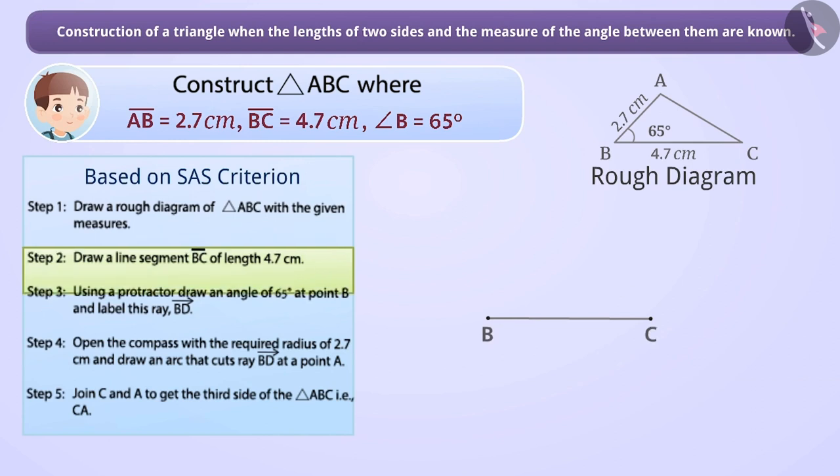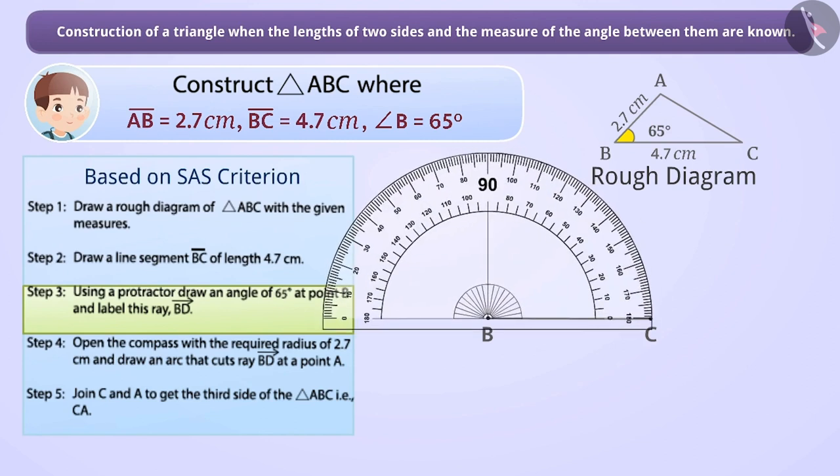Step 3. Here, we have sides BC and AB and the angle B measuring 65 degrees included between them. With B as a center, draw an angle of 65 degrees with the help of a protractor. Draw a ray at point B.